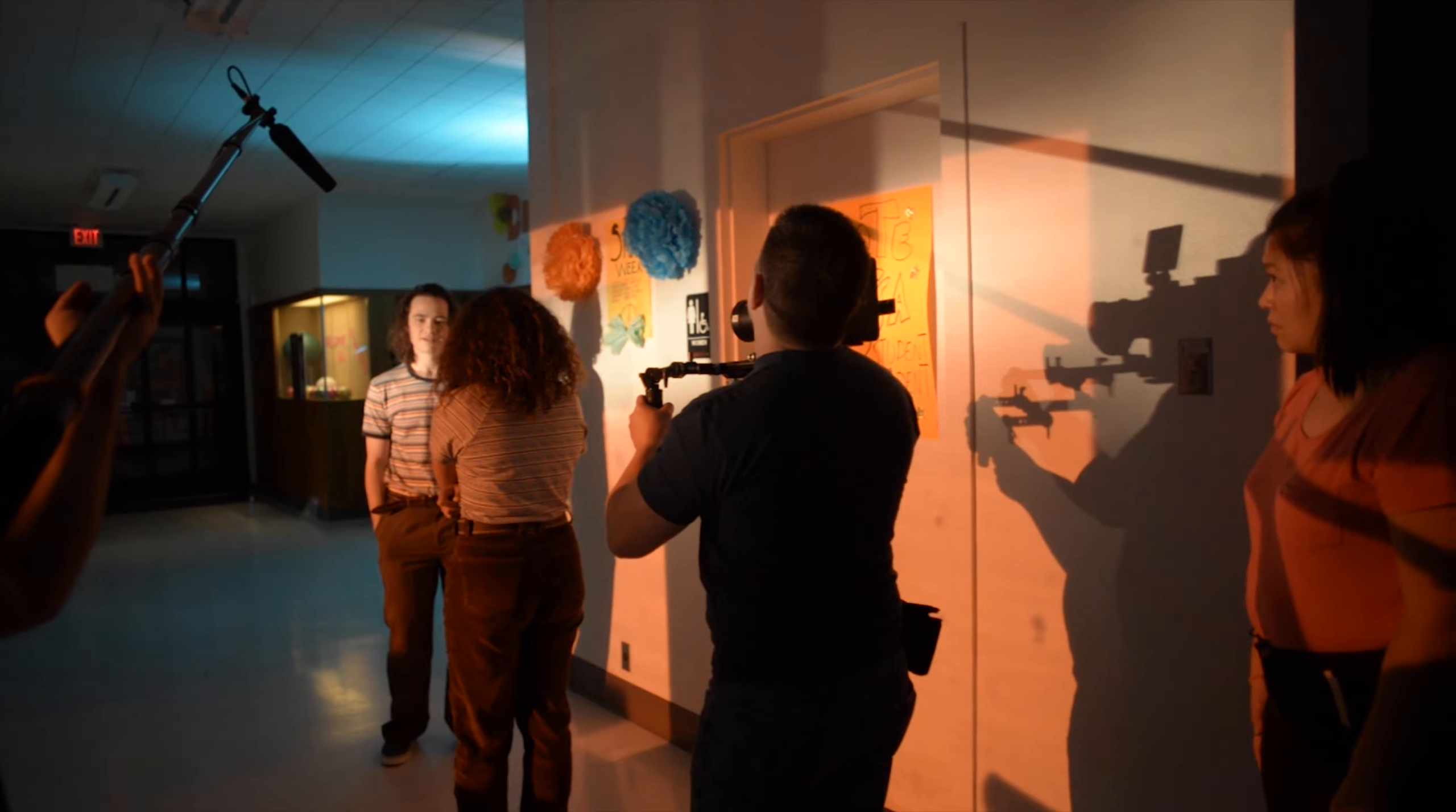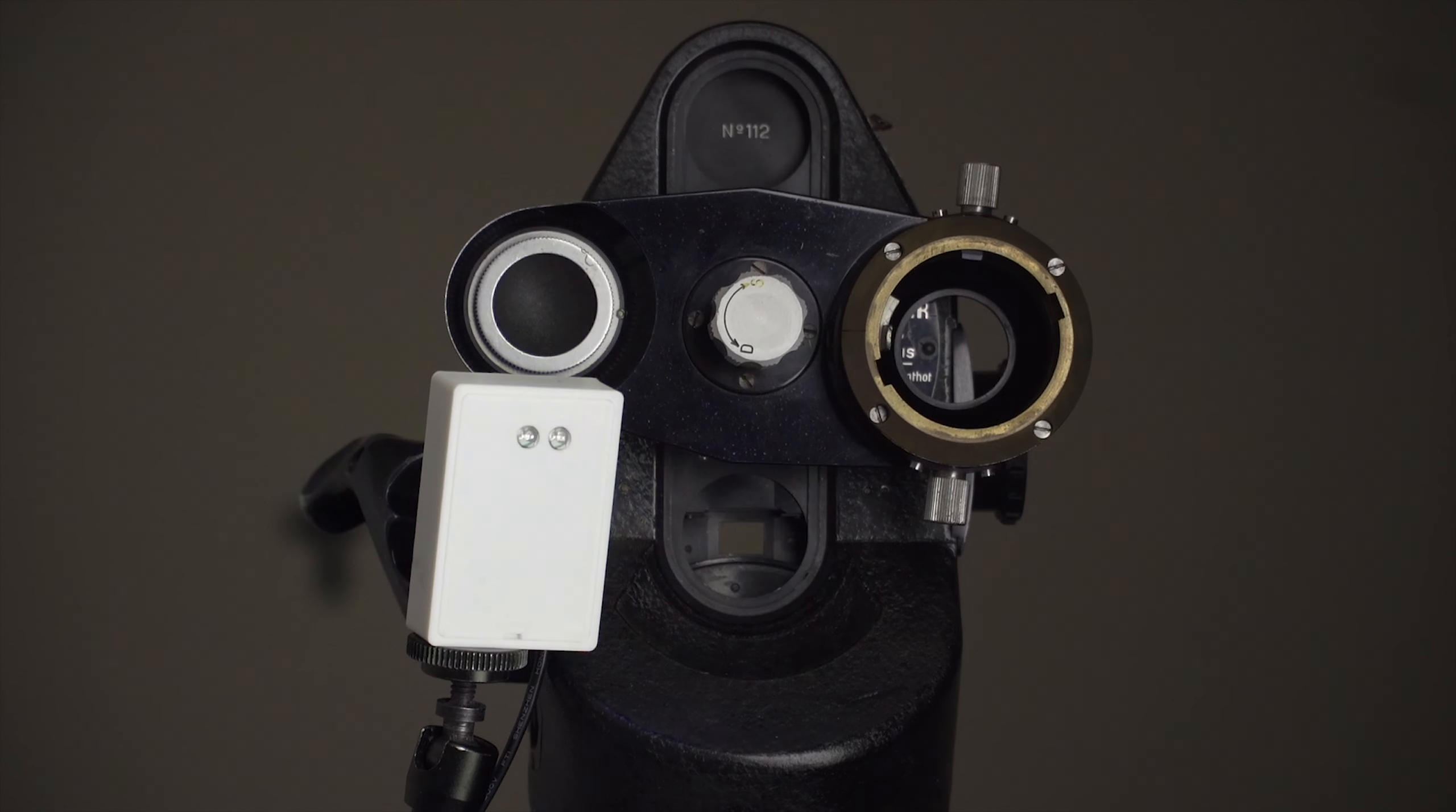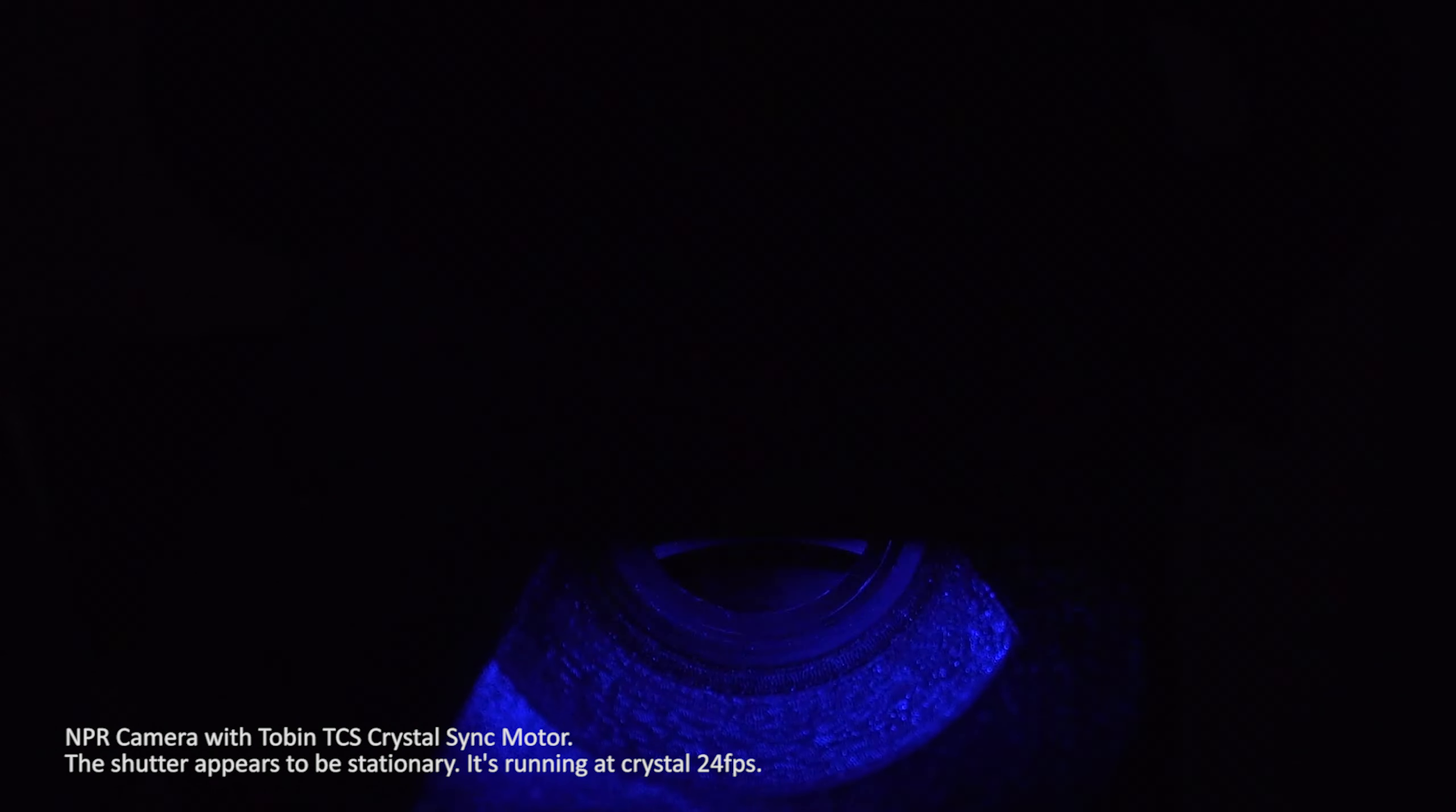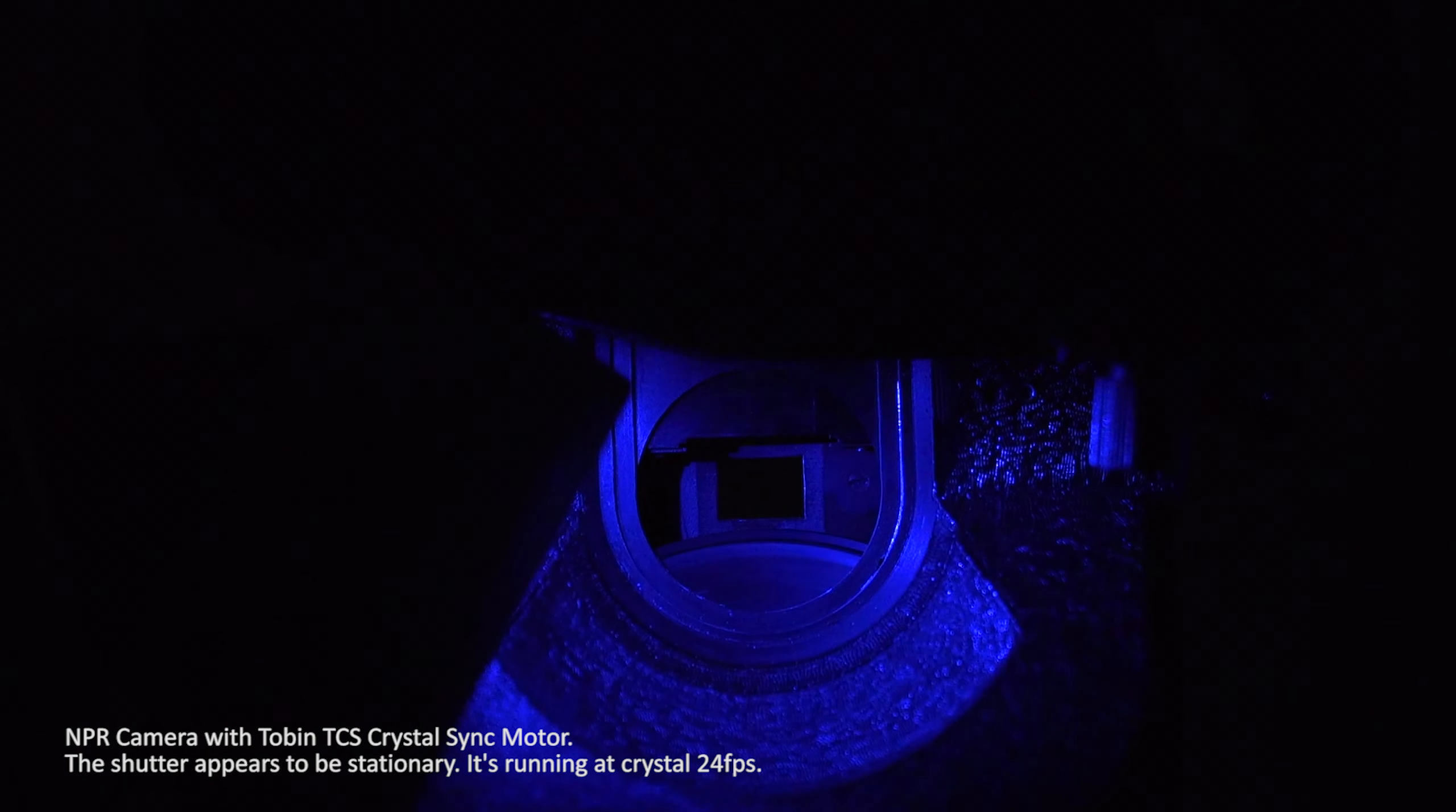Now a stroboscope or strobe is an instrument used to make a cyclically moving object appear to be slow moving or stationary. It's a lamp that produces brief repetitive flashes of light. What I have here is a strobe designed to measure camera speeds. I have it set to 24 frames per second right now. A light source flickering at 24 Hertz makes an object that moves at 24 revolutions per second appear stationary. I'm going to use some cameras that have crystal sync motors to prove this concept.